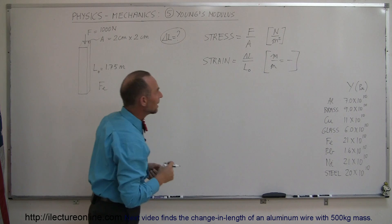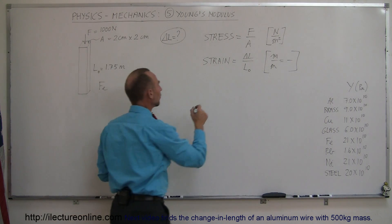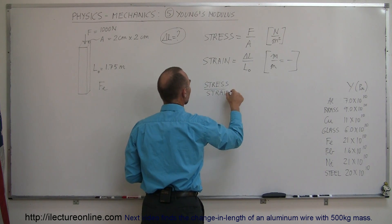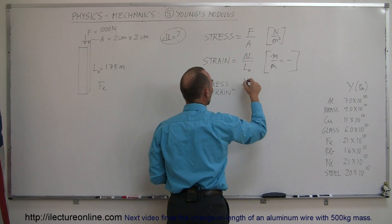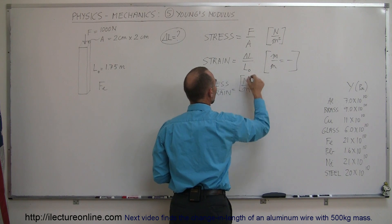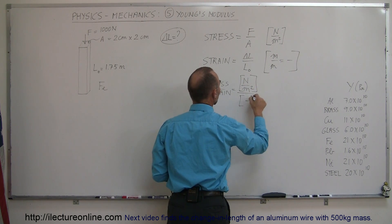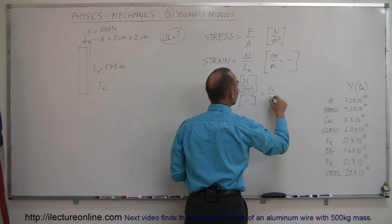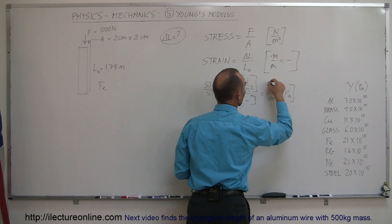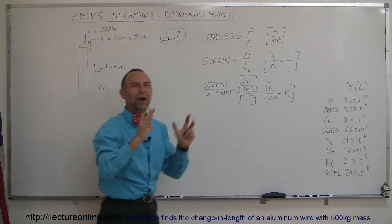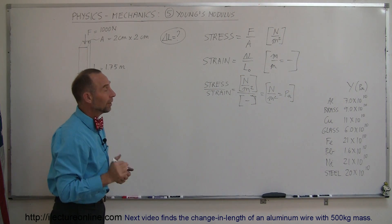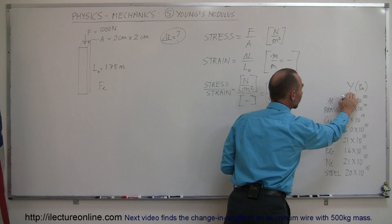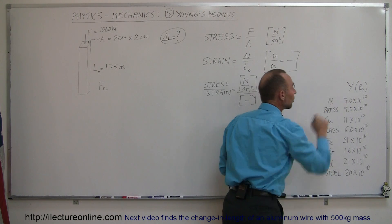So strain is a unitless concept. Now if we take the ratio of stress divided by strain, that would be Newtons per square meter, or pascals, divided by no units. So the ratio in units is simply Newtons per square meter, or pascals. Therefore, since stress divided by strain equals Young's modulus, Young's modulus has units of Newtons per square meter, or pascals.